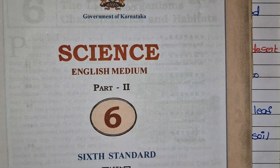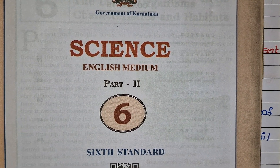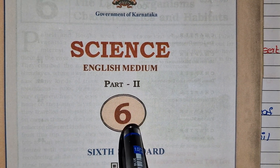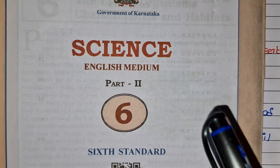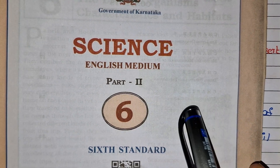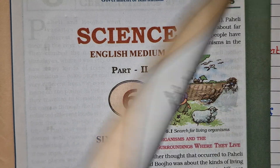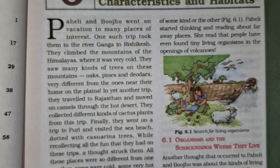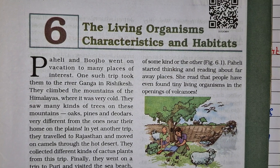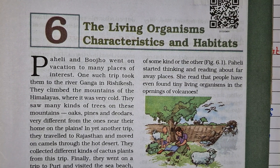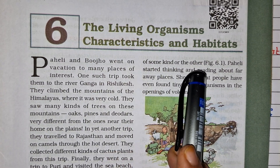Hi friends, welcome back to my channel. Today we are going to solve the 6th class science part 2. It's a revised syllabus 2024. The first chapter is the living organism characteristics and the habitats.